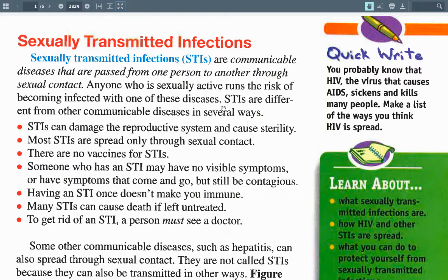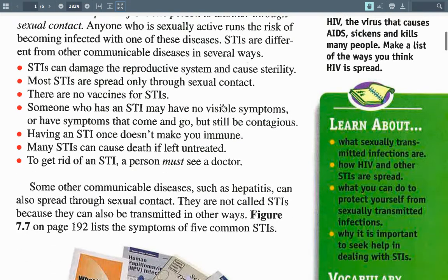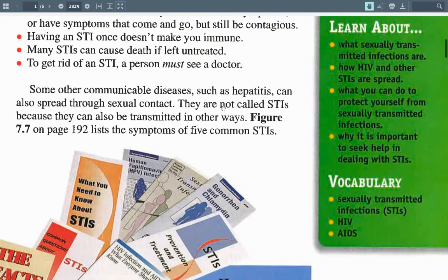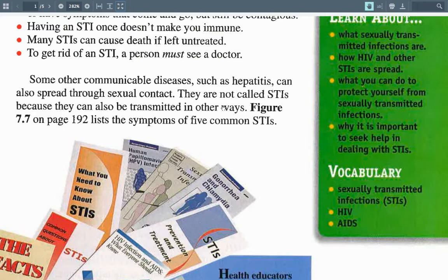Most STIs are spread through sexual contact. There are no vaccines for STIs. Someone who has an STI may have no visible symptoms, or have symptoms that come and go, but still be contagious. Having an STI once doesn't make you immune. Many STIs cause death if left untreated. To get rid of an STI, a person must see a doctor — if you can get rid of them. Some communicable diseases such as hepatitis can spread through sexual contact but are not called STIs because they can be transmitted in other ways.